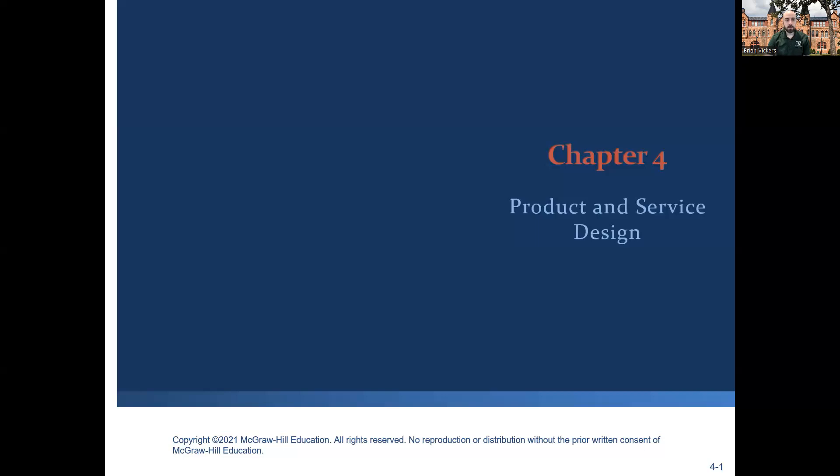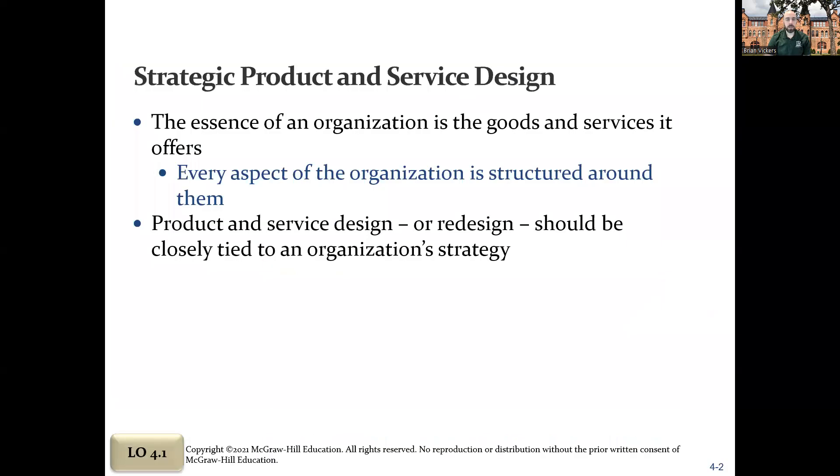Chapter 4, product and service design. We've talked about how an organization is all about the goods and services that it offers. The operations team is producing that good or providing that service, and really all the other departments and services are structured around that part of the organization. Everything is there to support what your organization exists to do.